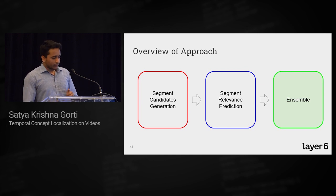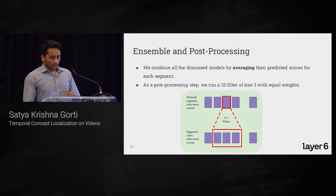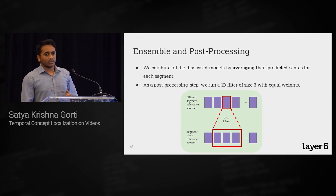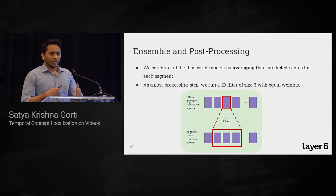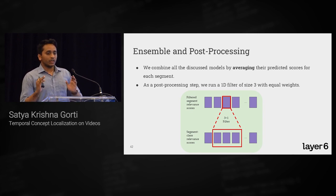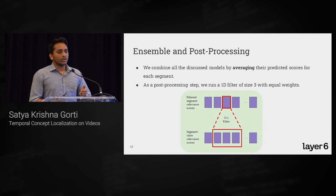For ensembling, we average the class likelihoods across all models, since some models are better at identifying certain classes and they complement each other. As a final post-processing step, we apply a one-dimensional equal-weight filter along the video to incorporate neighborhood information and smooth the output class probabilities.